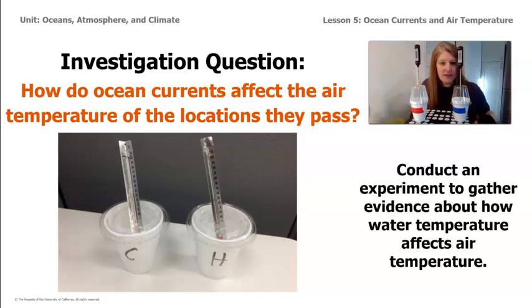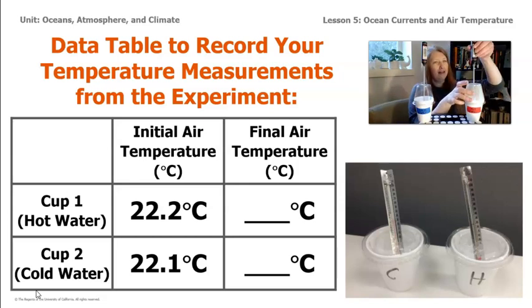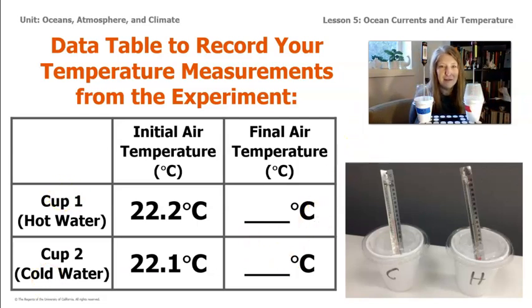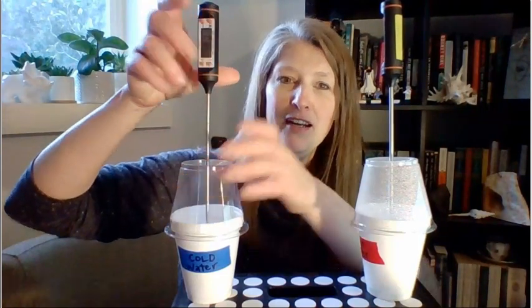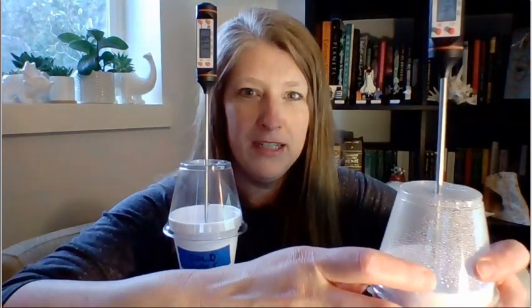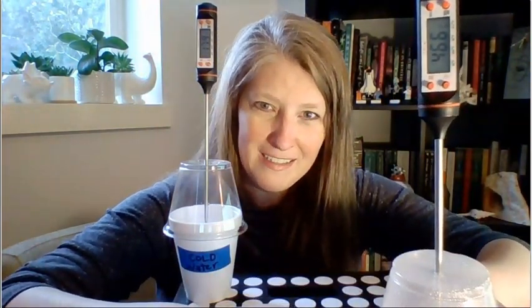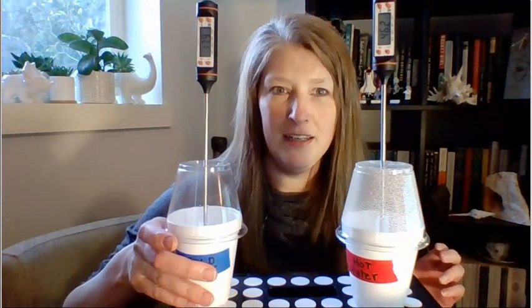Let's see what our results are. The timer's gone off. Let's take a look at our results and zoom out so you can see. The hot water cup thermometer is at 46.6 degrees Celsius — that's a huge increase. And the cold water one is at 17.9 degrees Celsius. So let's take a moment to record that in our data table.